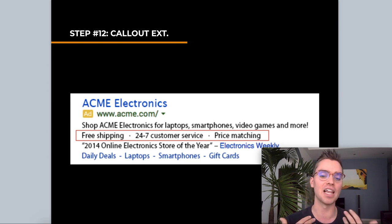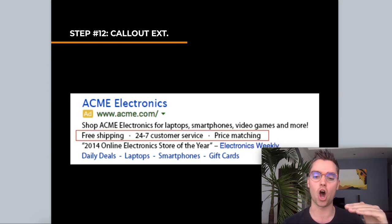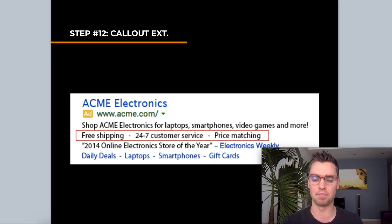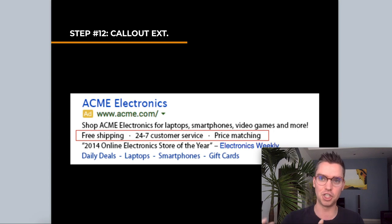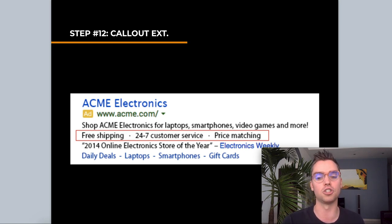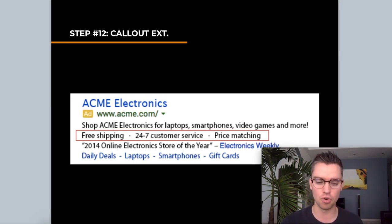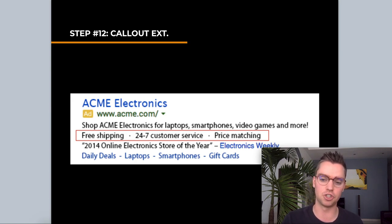Callout extensions are highlighted here in the red box. They add a little more opportunity to sell to visitors and give your Google ad more space. Think of it like a retail store giving you allocated space — you want to use 100% of the space you're given. Same with digital retail space on Google Ads: the more space you use, the more opportunities you have to convince someone to click. For callout extensions — same idea: features and benefits, what matters to your customer. What makes you different? What makes you special?